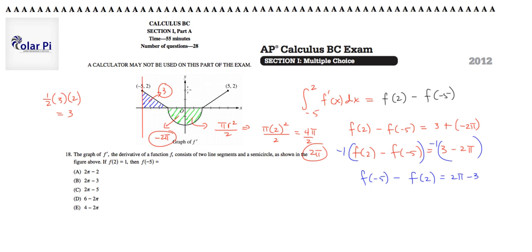Now that I know from the given information that f of 2 is equal to 1, I could write f of negative 5 minus f of 2 is 1, so minus 1 is equal to 2 pi minus 3. Therefore, f of negative 5 is equal to 2 pi minus 3 plus 1, or 2 pi minus 2, which is answer choice A.